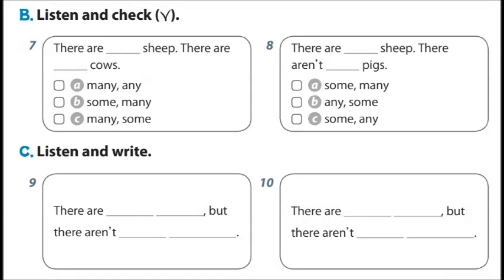B. Listen and check. 7. There are many sheep. There are some cows. 8. There are some sheep. There aren't any pigs.